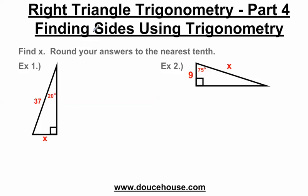To find sides using trigonometry, there are a couple things you need to know. First of all, for me to find x, I need to have an angle other than the 90 degrees, and I need to have a side length on the triangle. I need to have two things to find the missing side — the angle other than the 90 and one of the side lengths. Otherwise, you can't use trigonometry.